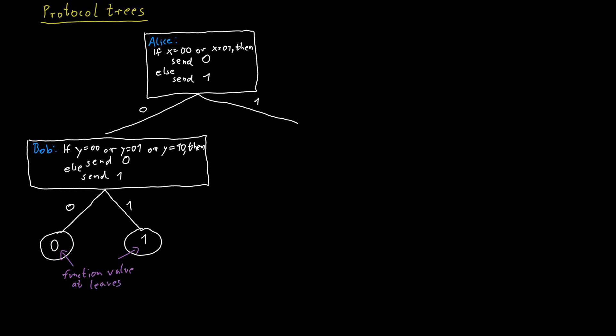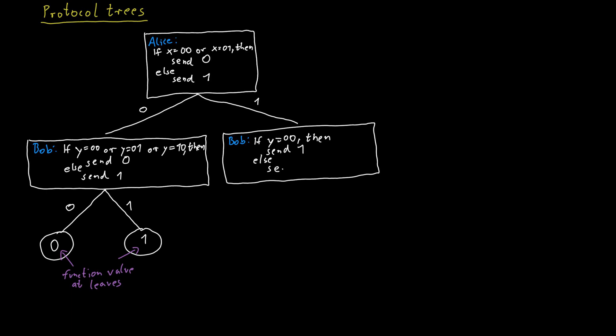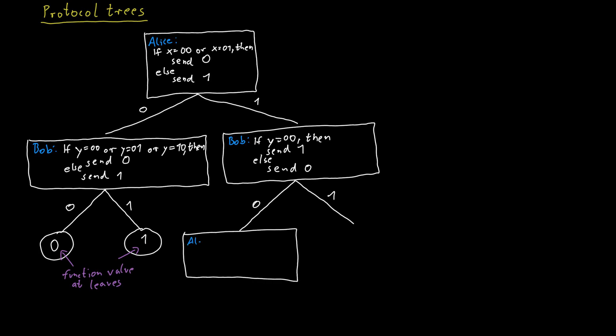We have to do the same thing for all other situations. If in the first step Alice did send a 1 to Bob, then we go to the right child node of the root, and Bob gets different instructions — he sends a 1 to Alice if he sees input 00, and sends a 0 otherwise. This is how we construct the entire tree. The leaf nodes specify the result of the computation, and each internal node belongs to either Alice or Bob and exactly specifies what they should do.